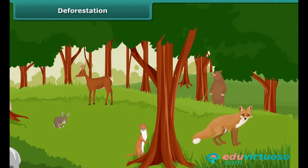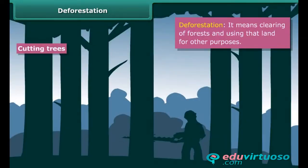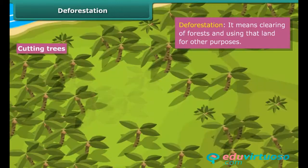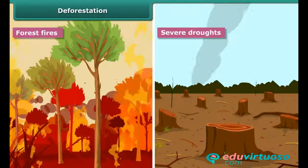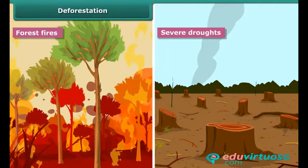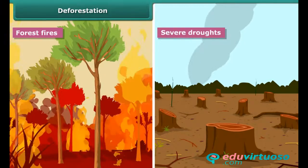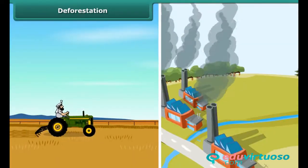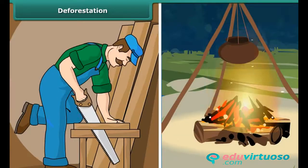But a major threat to survival of these organisms is deforestation. Deforestation is clearing of forests and using that land for other purposes. Some natural causes of deforestation are forest fires and severe droughts. Man-made causes include cutting of forest trees for procuring land for cultivation, building houses and factories, making furniture or using wood as fuel.